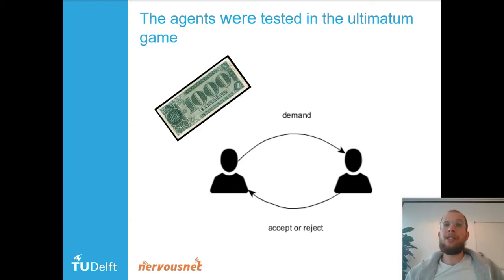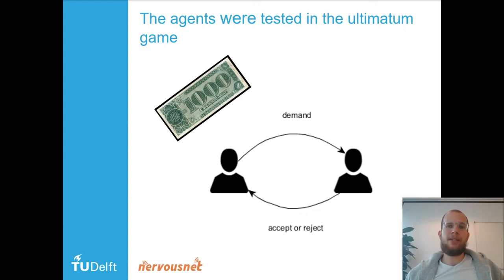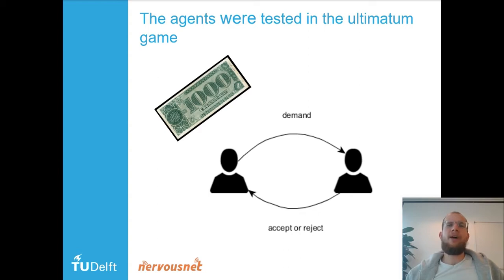But the other one can accept or reject. If the other one accepts, they both get the proposed split. But if the other one rejects, they both don't get anything. Humans here on average give away about 40%.